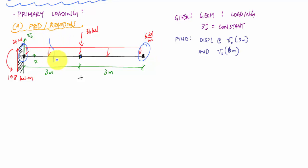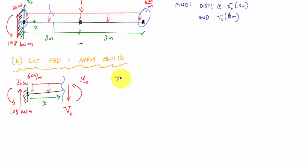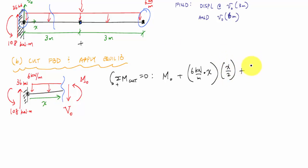I'll make a cut and draw a free body diagram of that cut, then apply equilibrium to get the moment function. Summing moments about the cut involves the resultant of the distributed load times the arm x/2, plus the moment reaction of 108 kilonewton·meters, minus 36 kilonewtons times x, equal to zero. That gives me my moment function M₀.